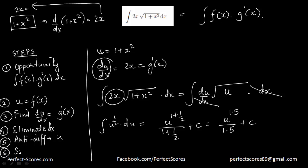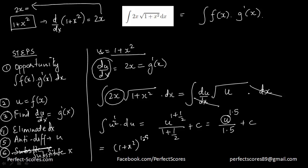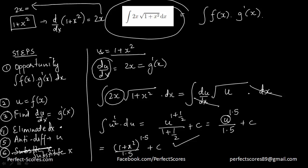Finally, substitute x back in terms of u. Since u = 1 + x², the answer is (1 + x²)^1.5 divided by 1.5 plus c. To summarize the steps: identify the opportunity, set u equal to f(x), find du/dx equal to g'(x), eliminate dx, anti-differentiate in u, then substitute x back to get your answer.